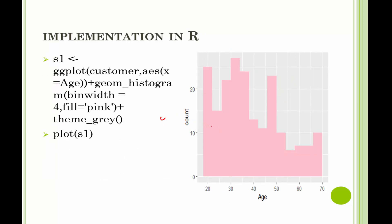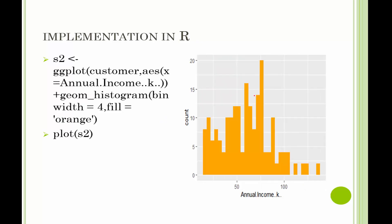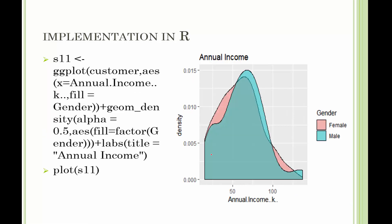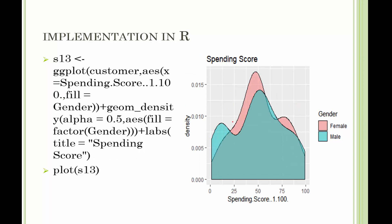We first look at the distribution of gender — we have 200 observations: 112 female and 88 male customers. Then we look at the age distribution, ranging from 20 to 70, with most people between 20 and 50 — a younger population. We also examine income distribution and spending score. The spending score is a marketing score similar to a credit score. Cross-tabulation of annual income by gender shows the distribution looks more or less similar across both genders.